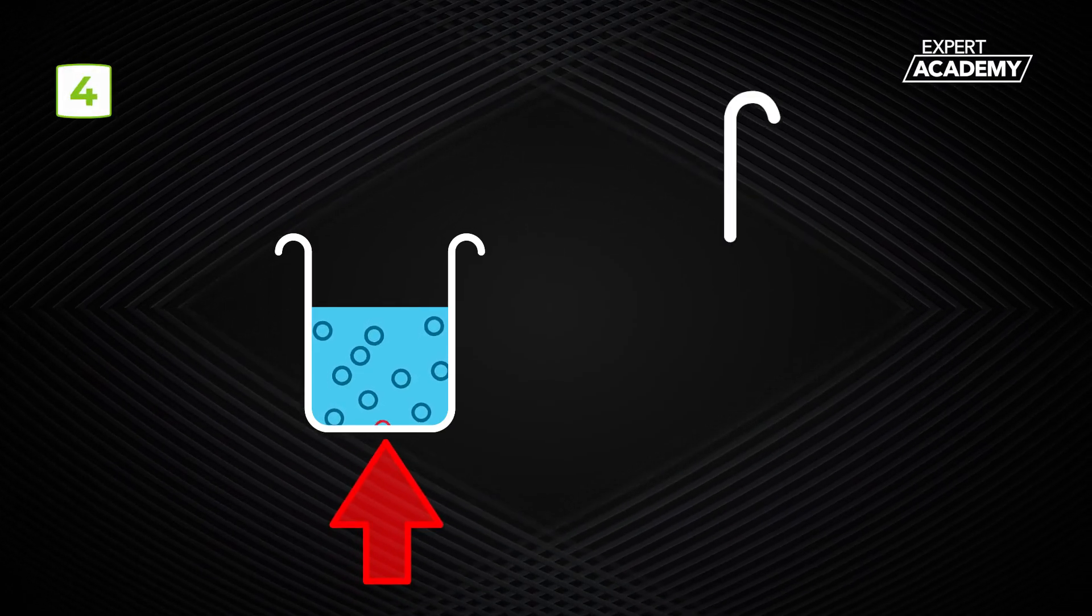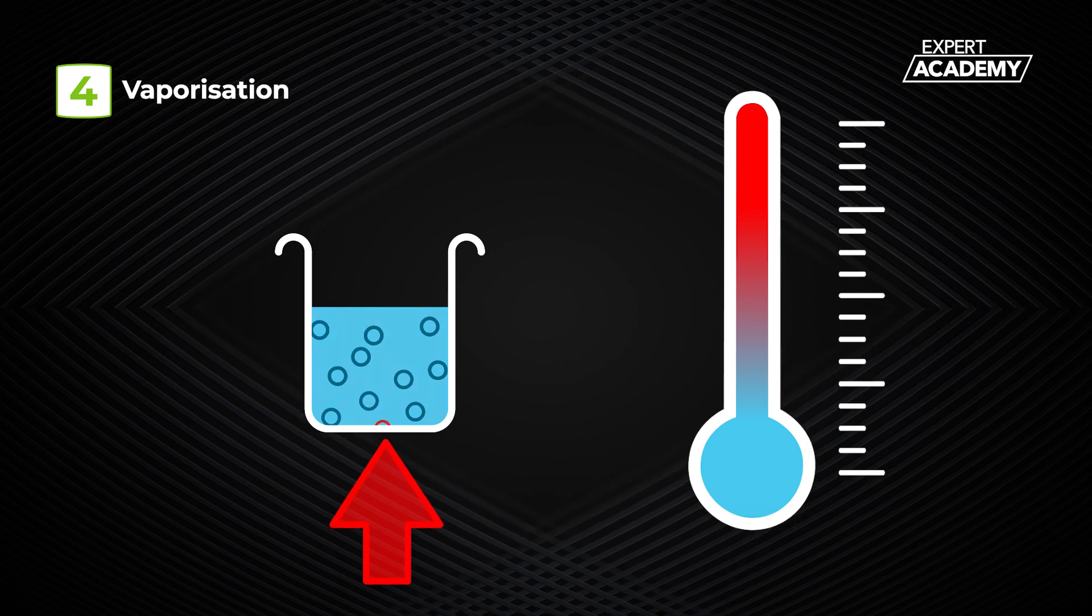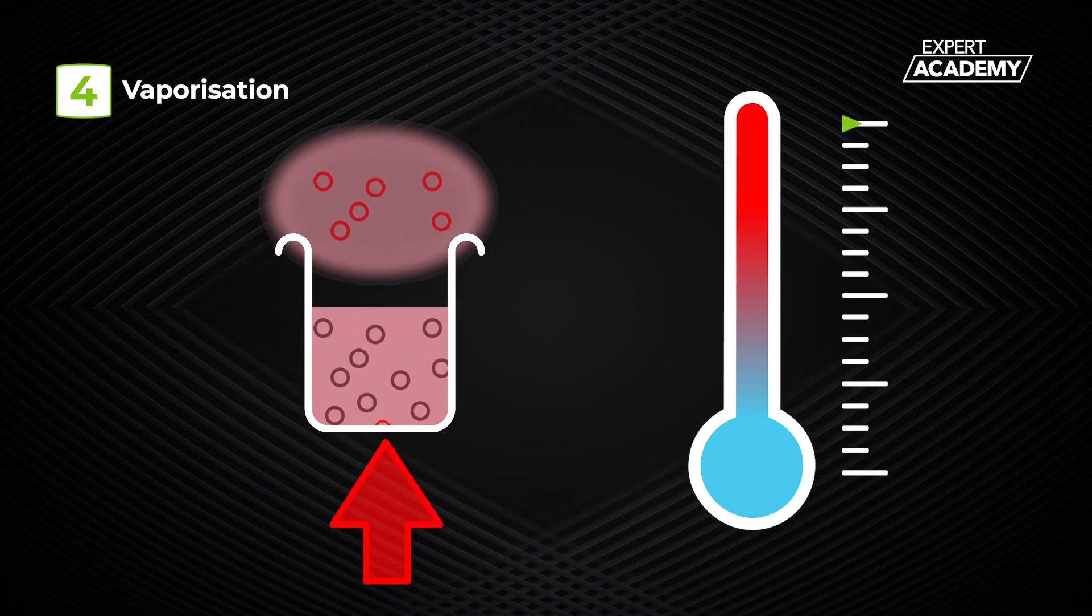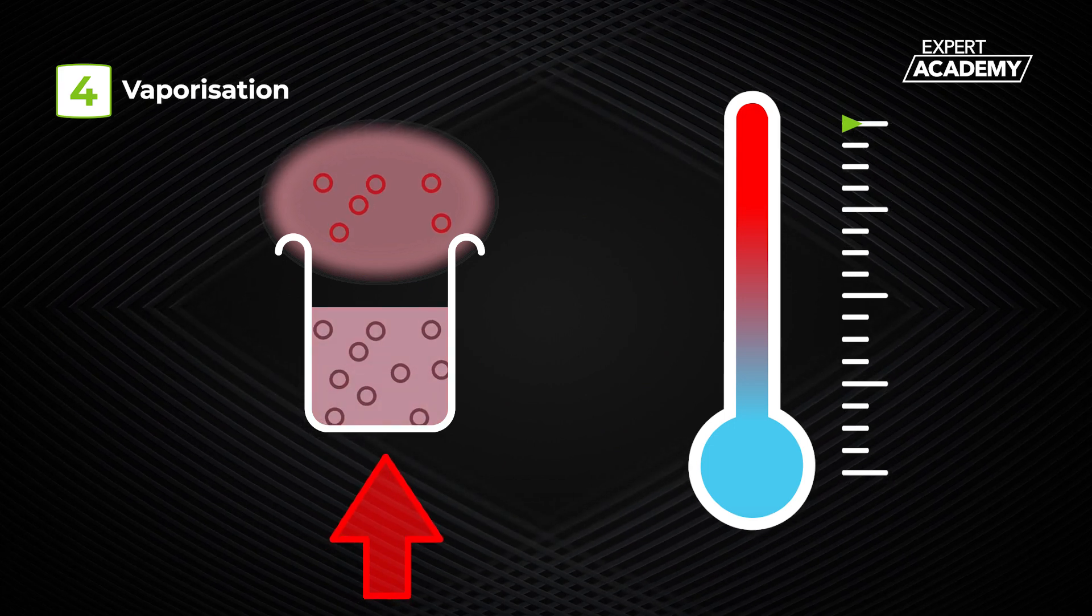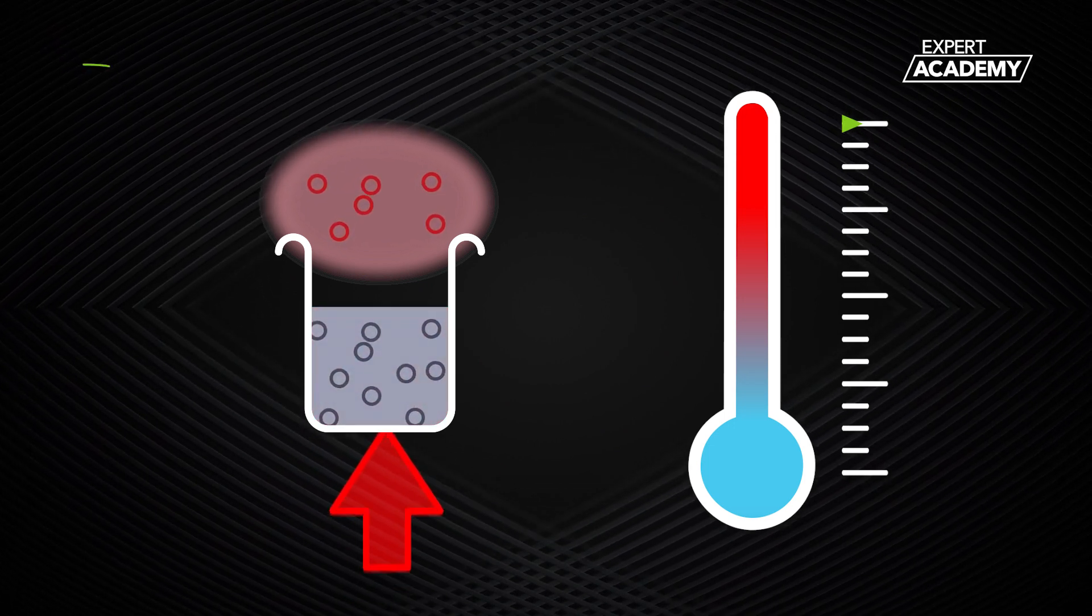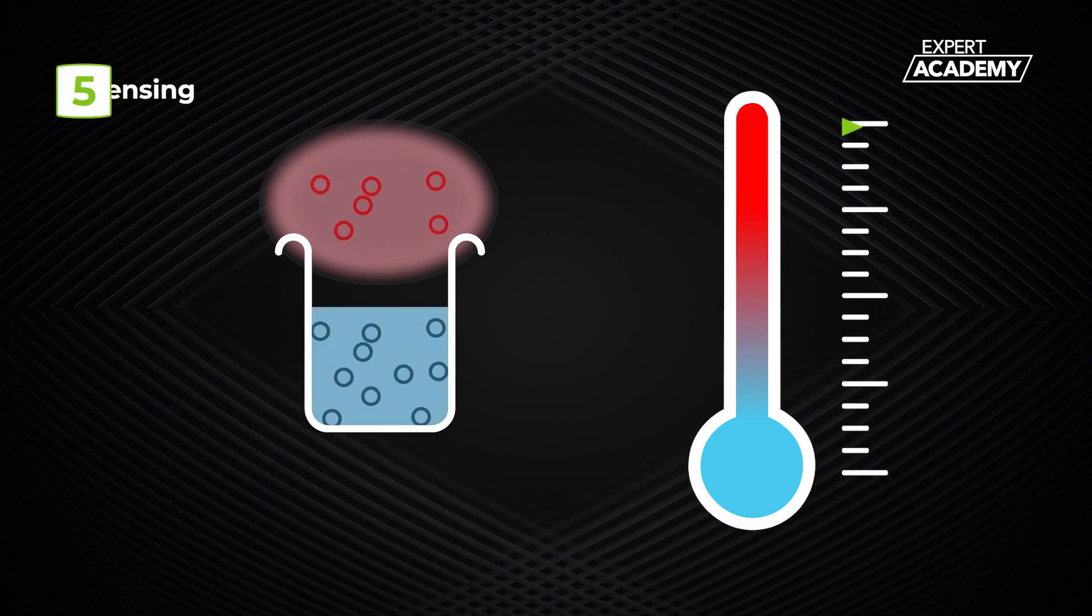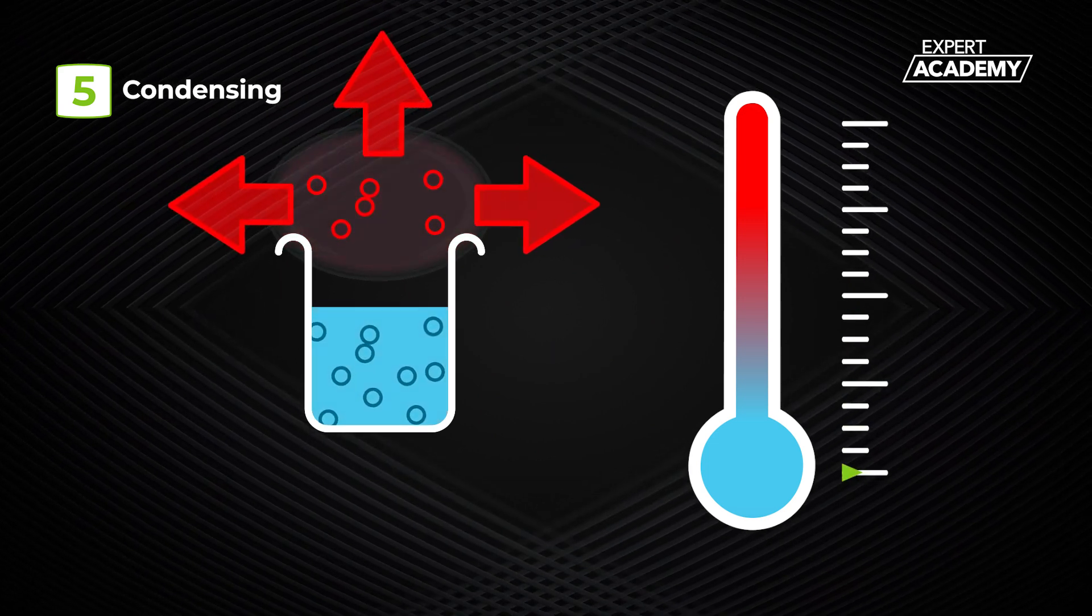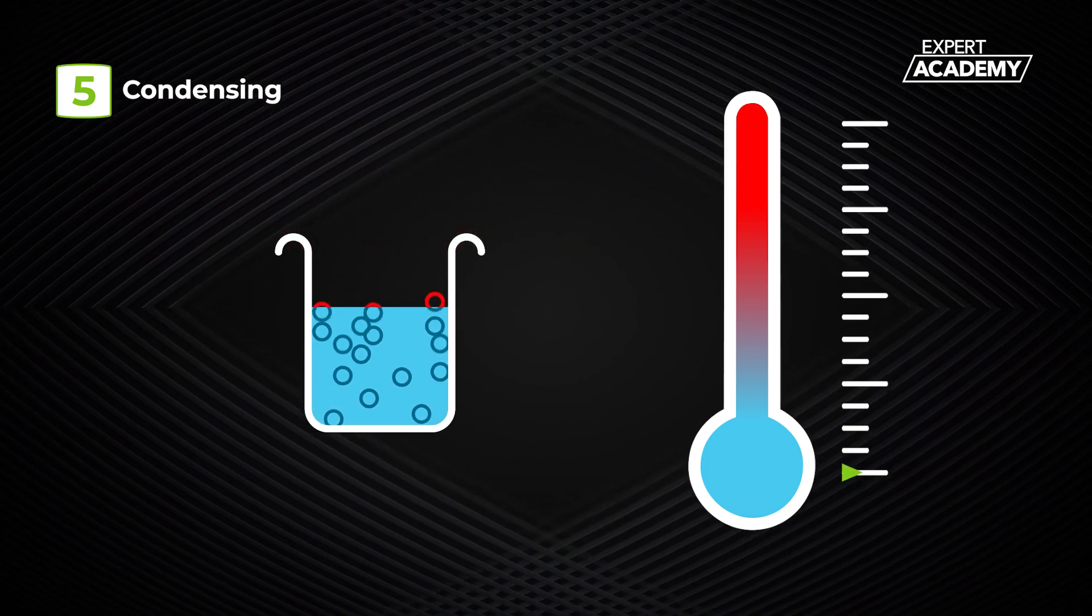Number four: when a refrigerant changes state from a liquid to a gas, it absorbs a large amount of thermal energy. This process is called vaporization. Number five: when a refrigerant changes state from a gas to a liquid, it releases a large amount of thermal energy. This process is called condensing.